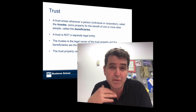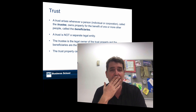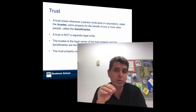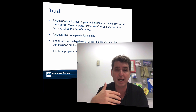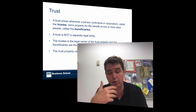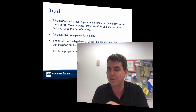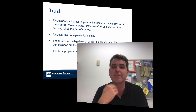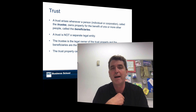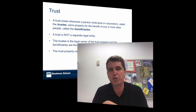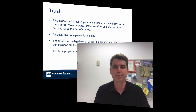The courts of equity came up with this idea of a trust, and this is still used today when we want to look after people who don't have capacity, when we want to look after them financially. It's also used for things like tax planning — one of the major other ways that trusts are used in a business setting. So a trust arises whenever someone called the trustee owns property for the benefit of someone else called a beneficiary.